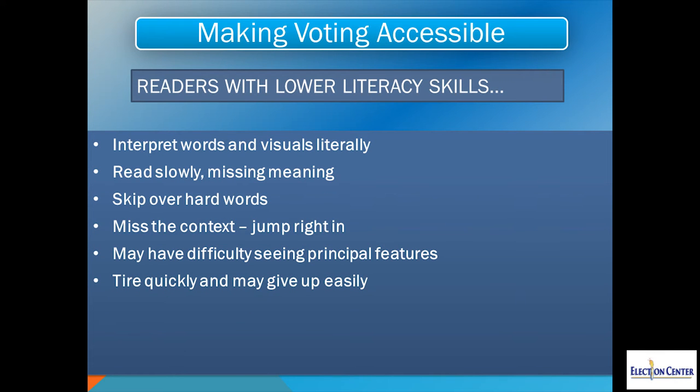Experts say that content really should be written at about the third grade level to be understandable to 90% of the U.S. population — a staggering figure. Readers with low literacy skills interpret words and visuals literally. They read very slowly so they get tired, frustrated, and lose meaning. They skip over hard words, miss the context, jump right in, may have difficulty seeing principal features, and tire quickly and may give up easily.